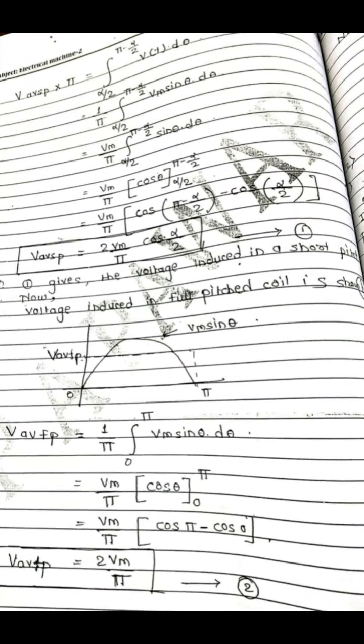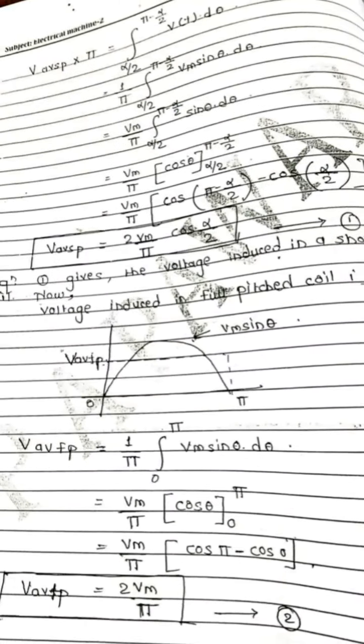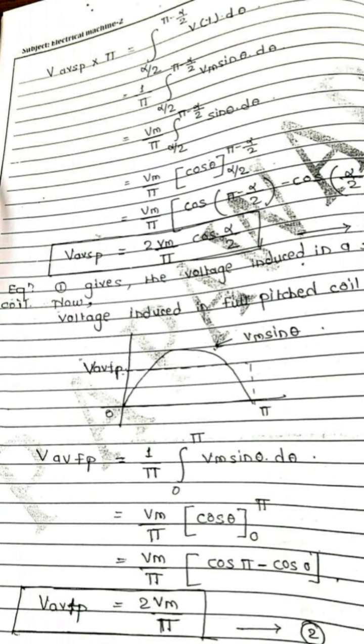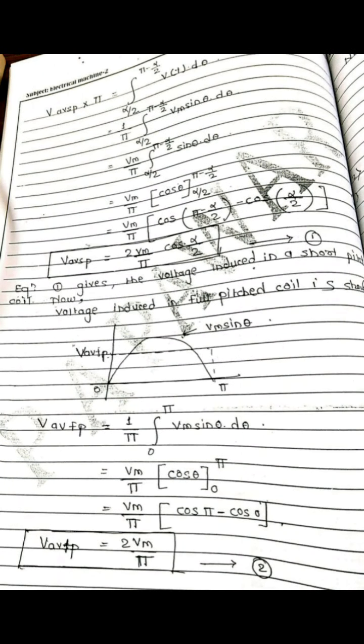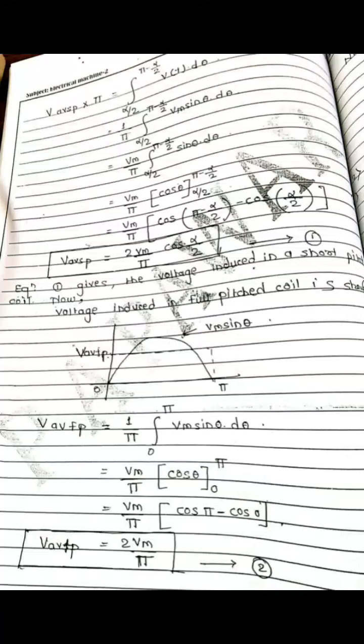Now we derive the voltage induced in a full pitch coil. The average voltage for the full pitch coil is: Vav_fp = (1/pi) × integral from 0 to pi of Vm sin(theta) d(theta). Taking Vm outside: Vm/pi × [−cos(theta)] from 0 to pi. Substituting the limits: Vm/pi × (−cos(pi) − (−cos(0))) = Vm/pi × (1 + 1) = 2Vm/pi. So Vav_fp = 2Vm/pi.